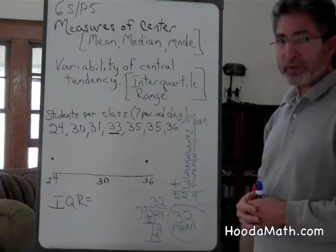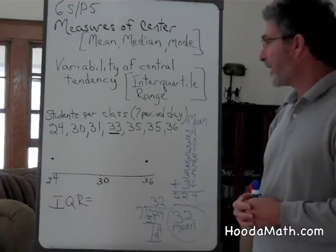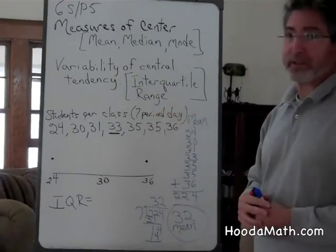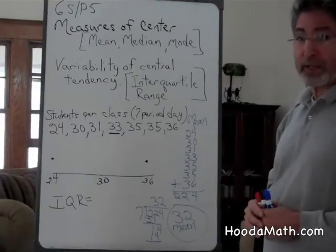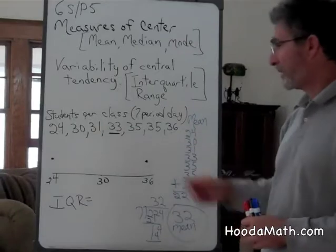Juan is a student, and he has seven classes in his school day. The amount of students per class varies from 24 to 36.